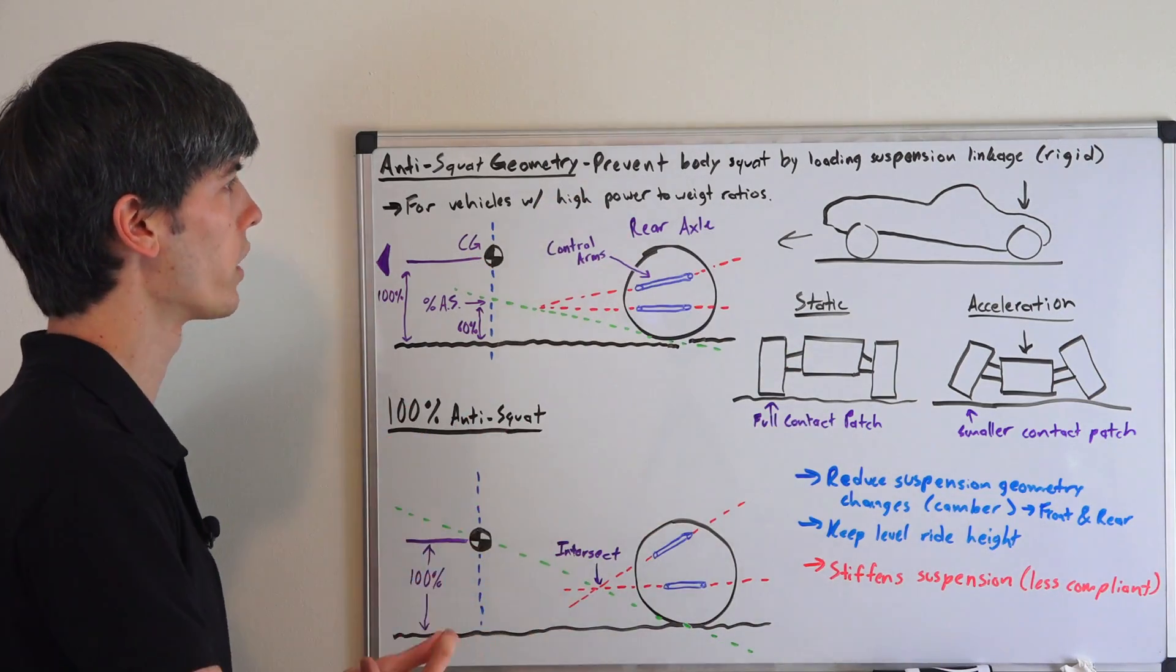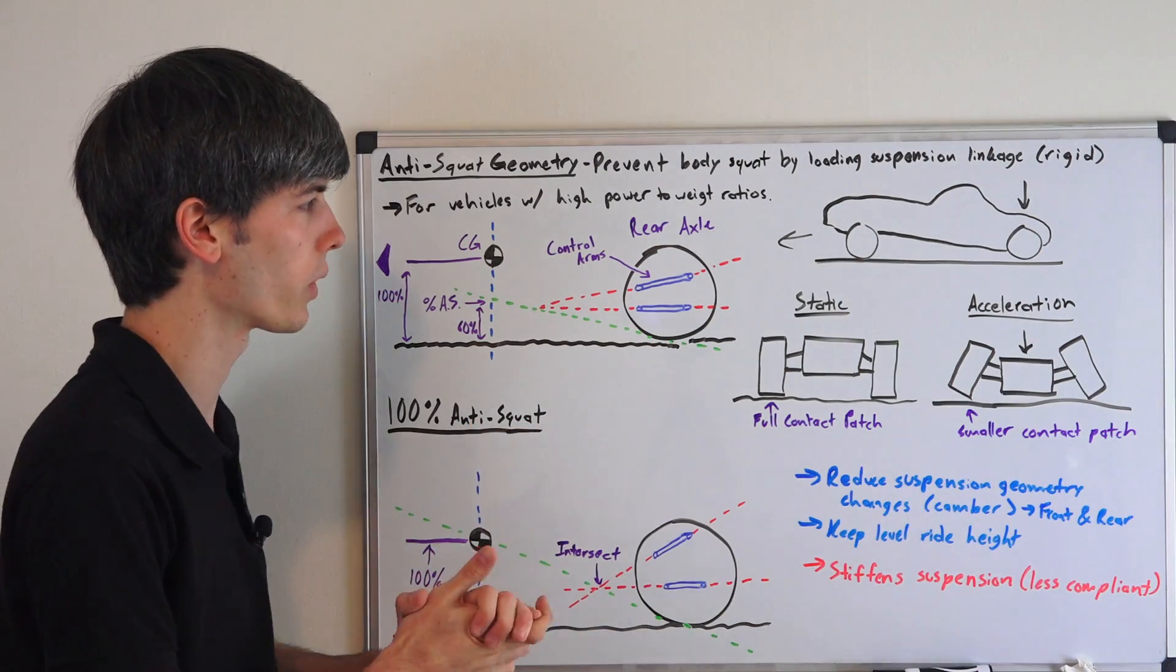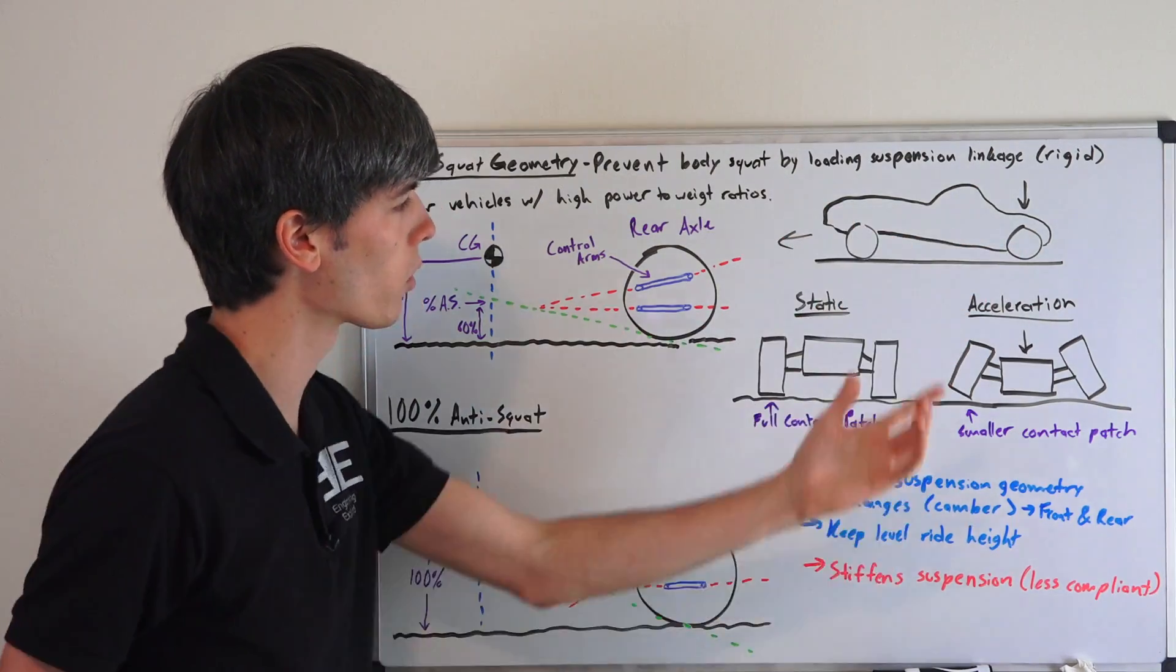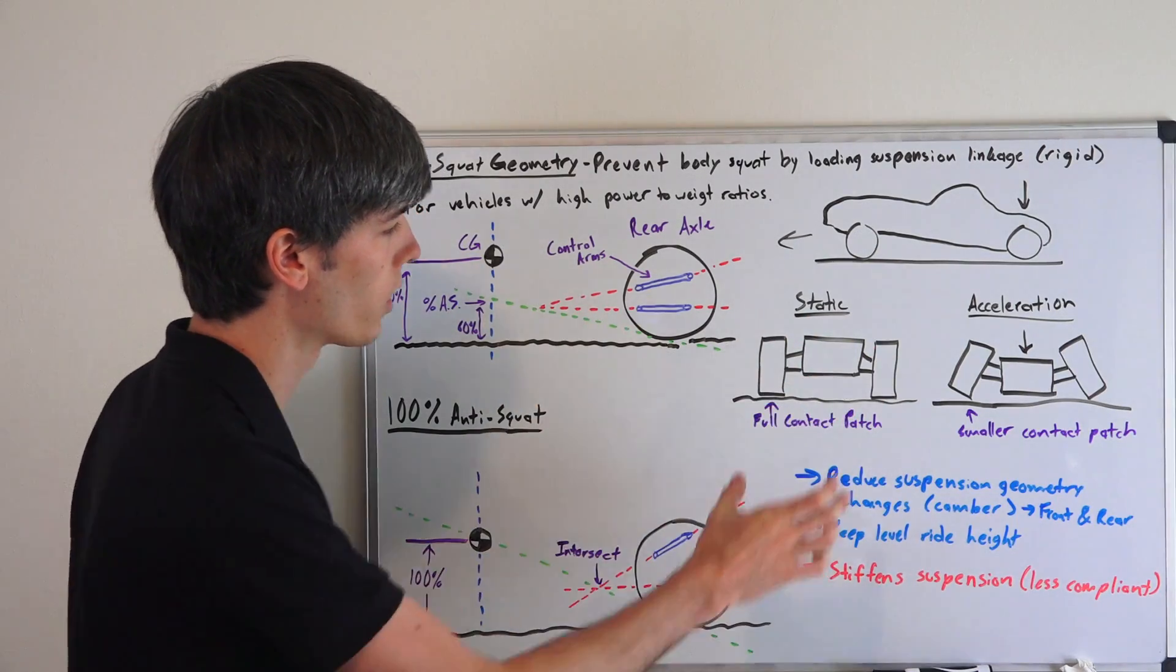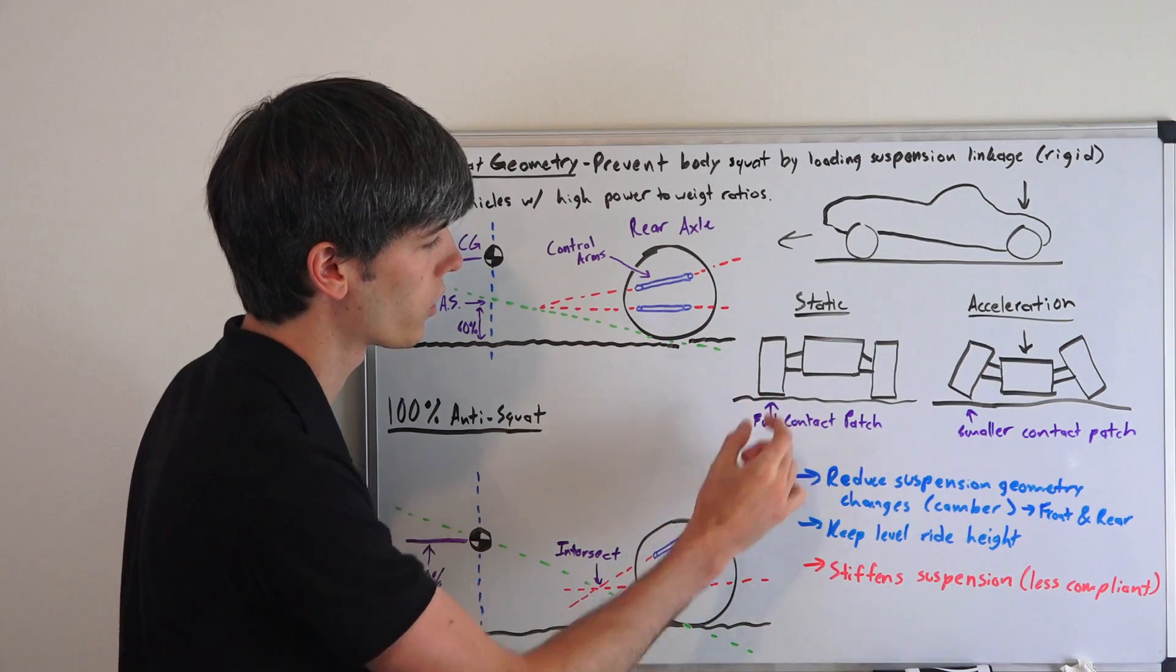So why would you want to use anti-squat suspension geometry? Basically if you're looking at a drawing here, and this is just a simple car accelerating, you can see that when it's static, nothing's wrong with this picture. You've got a full contact patch with your tires on the ground.